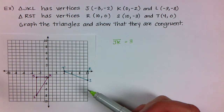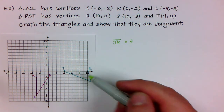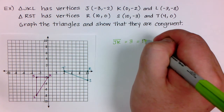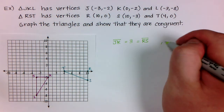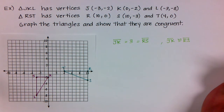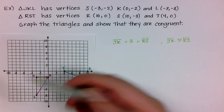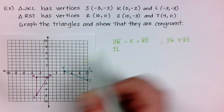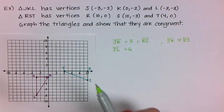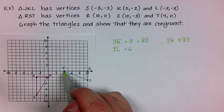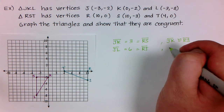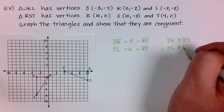Let me check the shortest side of triangle RST — that looks like it would be RS — and that's also 1, 2, 3 units. So already I know that JK is congruent to RS because they have the same length. Now let's look at JL: going from J down to L is 1, 2, 3, 4, 5, 6 units. And the horizontal length from R to T is also 1, 2, 3, 4, 5, 6 units. So JL is congruent to RT.